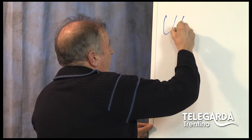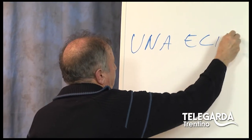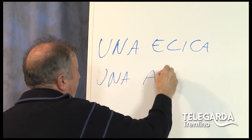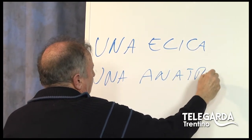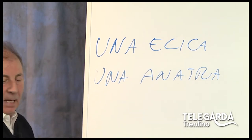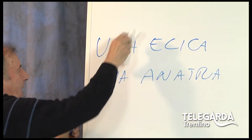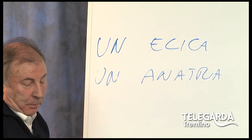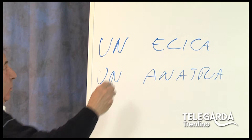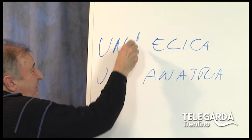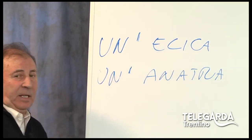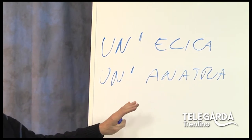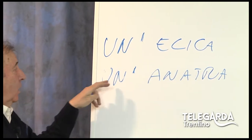Io posso scrivere "una elica", "una anatra". Però in realtà noi diciamo "un'elica", "un'anatra". Attenzione: se tolgo la A, sono costretto a metterci l'apostrofo, perché è un'elisione, perché qui le parole sono di genere femminile. Col maschile l'apostrofo non ci va mai. Quindi: un'elica, un'anatra.